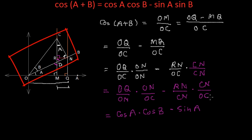CN by OC, CN is this and OC is this, these two lines are the part of triangle CON. CN is perpendicular and OC is hypotenuse for the angle B so CN by OC can be written as sin B.